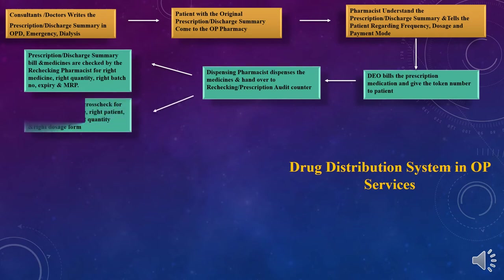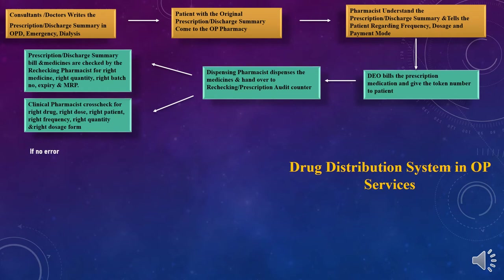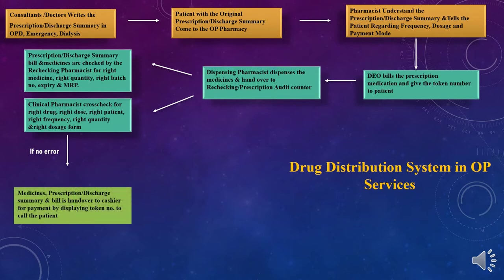At the prescription audit counter, a clinical pharmacist cross-checks for the right drug, right dose, right patient, right frequency, right quantity, and right dosage form. After double-checking, if no error is found in the prescription order, the medicines, prescription or discharge summary, and bill are handed over to the cashier for payment by displaying a token number, and the waiting patient is called.